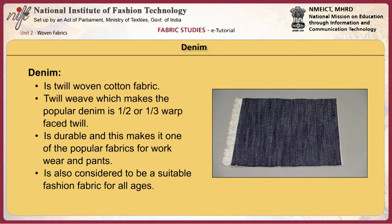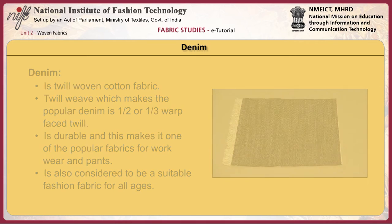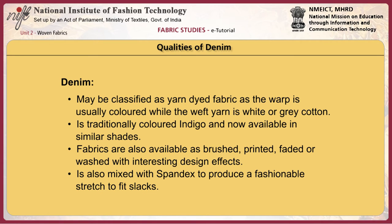Denim is a twill woven cotton fabric. The popular twill weave used for denim is 1x2 or 1x3 warp face twill. Its durability makes it one of the popular fabrics for work wear and pants. It is also considered a suitable fashion fabric for all ages. Denim is also classified as a yarn dyed fabric, as the warp is usually coloured while the weft yarn is white or grey cotton. The traditional colour of denim is indigo. Denim fabrics are also available as brushed, printed, faded or washed with interesting design effects. The fabric is also mixed with spandex to produce stretch-to-fit slacks.